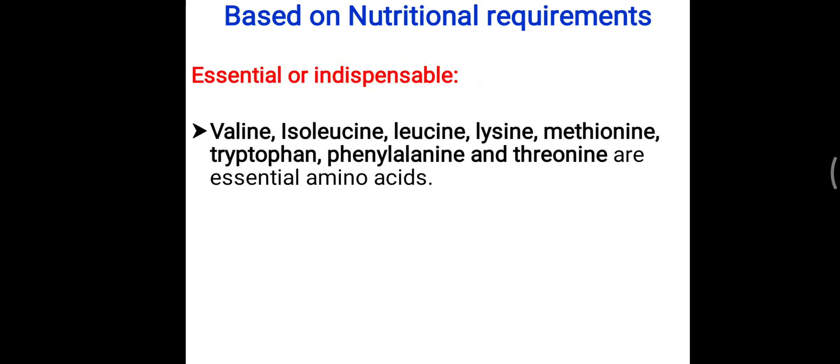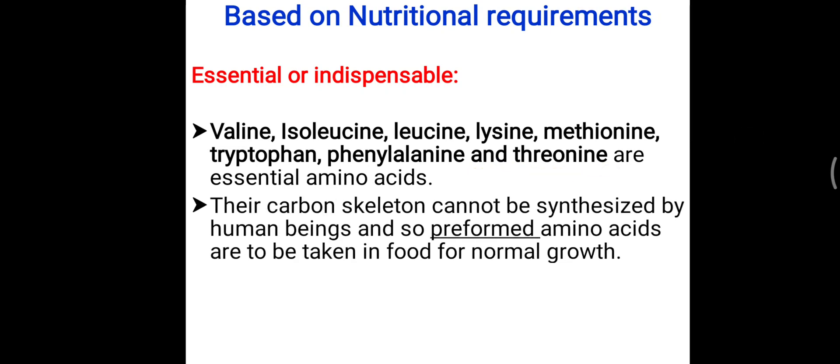Based on nutritional requirement, the most important amino acids are called essential or indispensable amino acids. We cannot synthesize them easily in our body, but we must obtain them for normal growth and maintaining health. These include valine, isoleucine, and leucine — the three branched-chain amino acids — along with lysine, methionine, tryptophan, phenylalanine, and threonine.